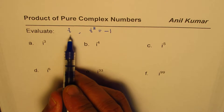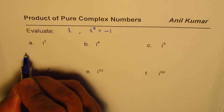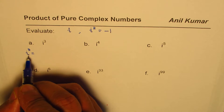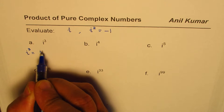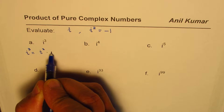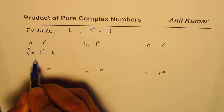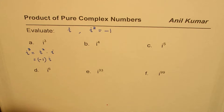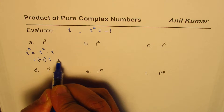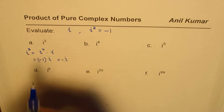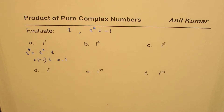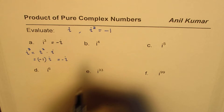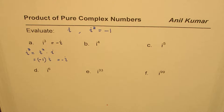Let's begin by evaluating i cubed. We have i to the power of 3, and since i squared is minus 1, we write this as i squared times i. That gives us minus 1 times i, which equals minus i. So i cubed is equal to minus i.